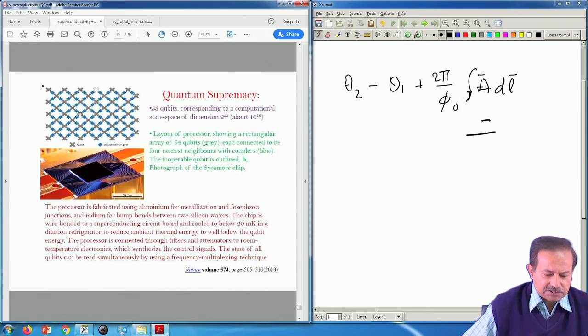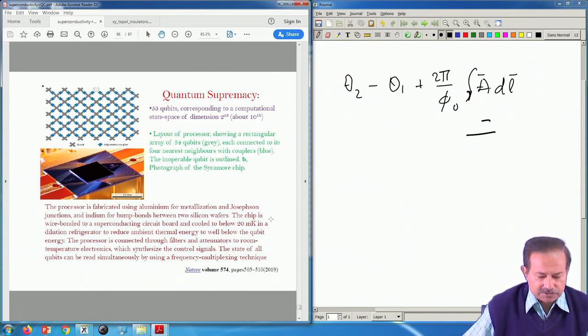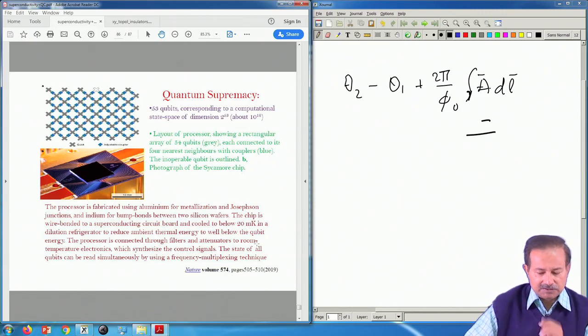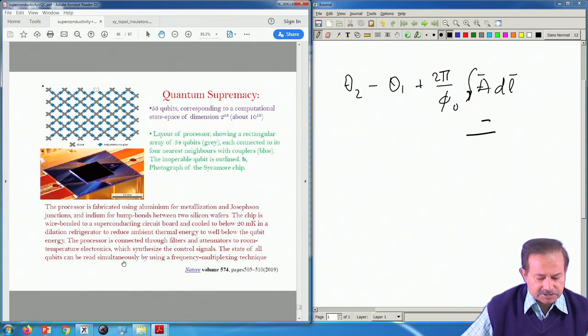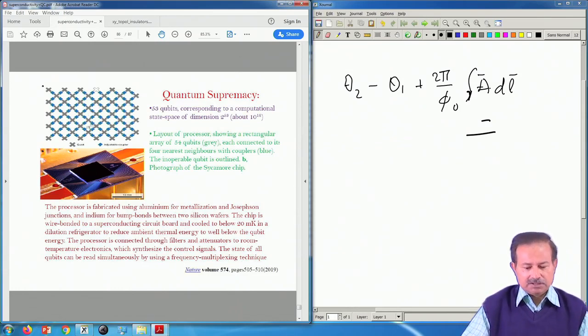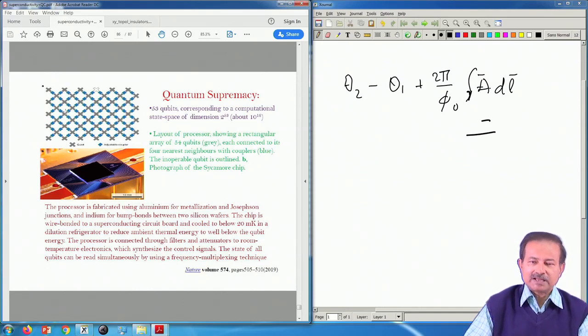Of course, to have a real quantum computer one needs to go to much much larger state space, typically 10,000 qubits are a possibility that people are talking about. That is where the real difference will show up. These are coupled Josephson junctions as you can see, these are the units. The processor is fabricated using aluminum for metallization and Josephson junctions and indium for bump bonds between two silicon wafers. The chip is wire bonded to a superconducting circuit board and cooled to below 20 millikelvin in a dilution refrigerator. The processor is connected through filters and attenuators to room temperature electronics which synthesize the control signals. So that is how the states are manipulated, the read and write of information. The qubits can be read simultaneously, the state of all the qubits can be read simultaneously by using some multiplexing techniques. This is at the heart, these Josephson junctions that we have just studied. The reason they are so important is because they are extraordinarily sensitive and they are quantum interference devices. So they are a natural choice for qubits.